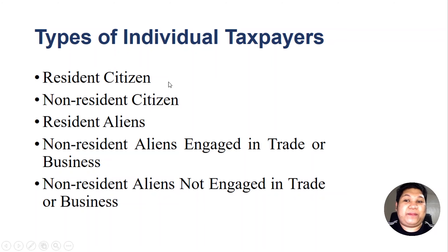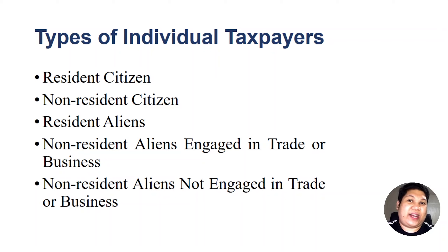While the four of them — the resident citizen, the non-resident citizen, resident aliens, and non-resident aliens engaged in trade or business — are subject to graduated rates. We will discuss in this video how to compute income tax using the graduated rates and the 8% optional rate for qualified individual taxpayers.